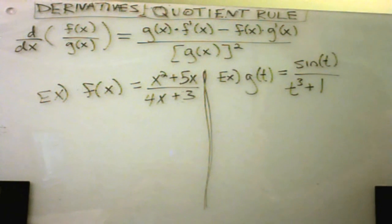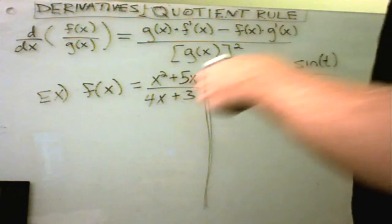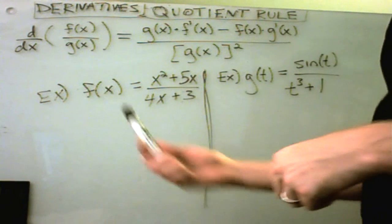Alright, this video will cover the quotient rule, another basic rule when it comes to taking derivatives. And the quotient rule is definitely a little more complicated than the product rule. And the idea is basically this.